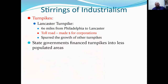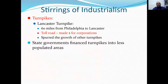Moving to more industrializing — you have the idea of turnpikes. A famous one is the Lancaster Turnpike, which was 60 miles of road from Philadelphia to Lancaster. It's a toll road. Turnpikes made money for private corporations and spurred the growth of other turnpikes, where travelers paid companies to use their roads to get from one place to another.